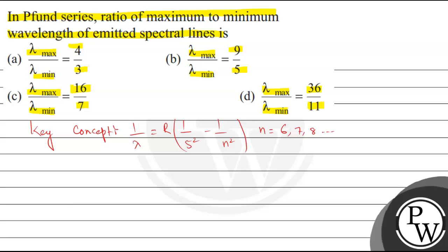Now lambda will be maximum at n equals 6, and lambda will be minimum at n equals infinity.